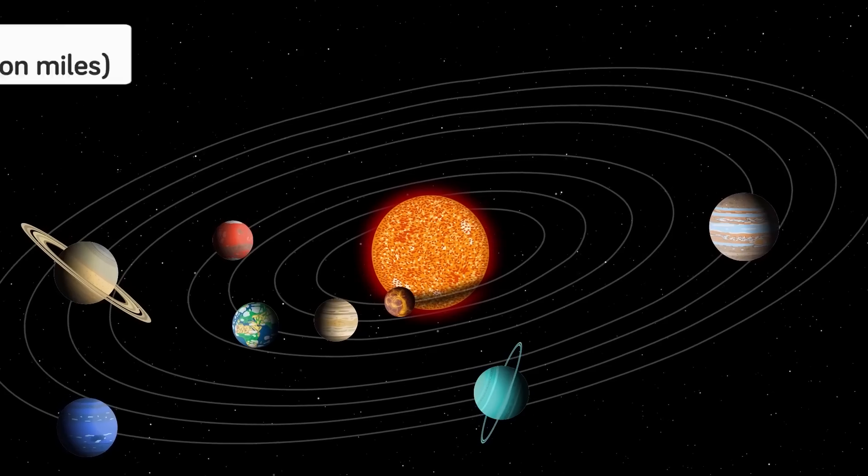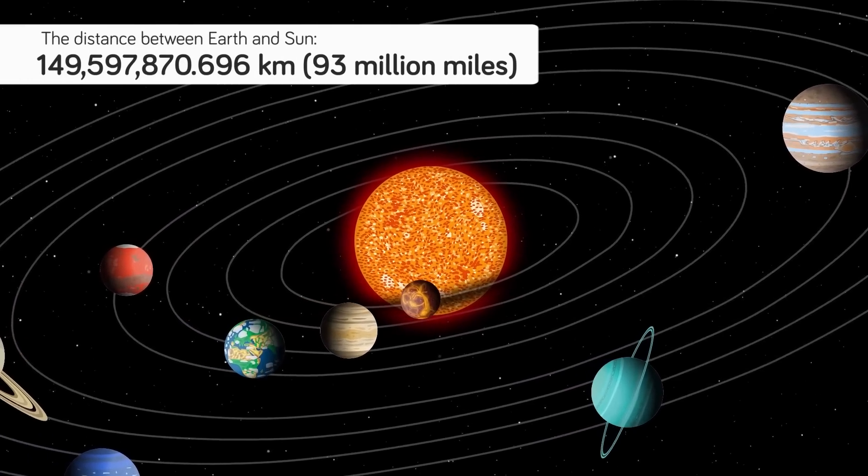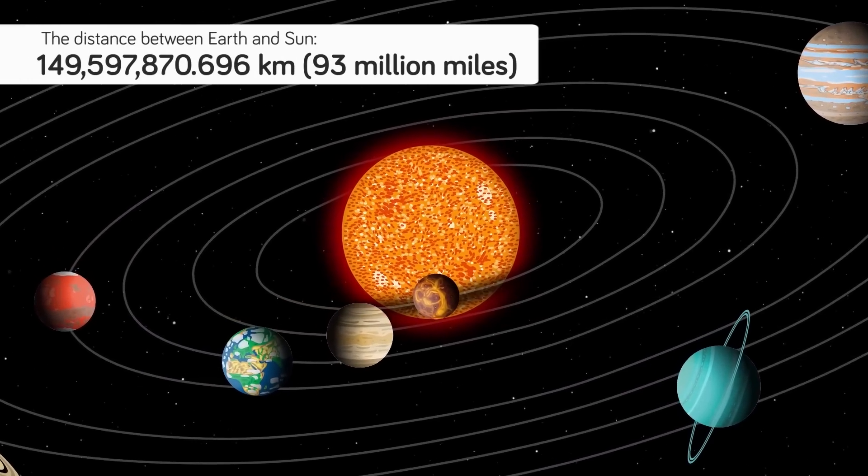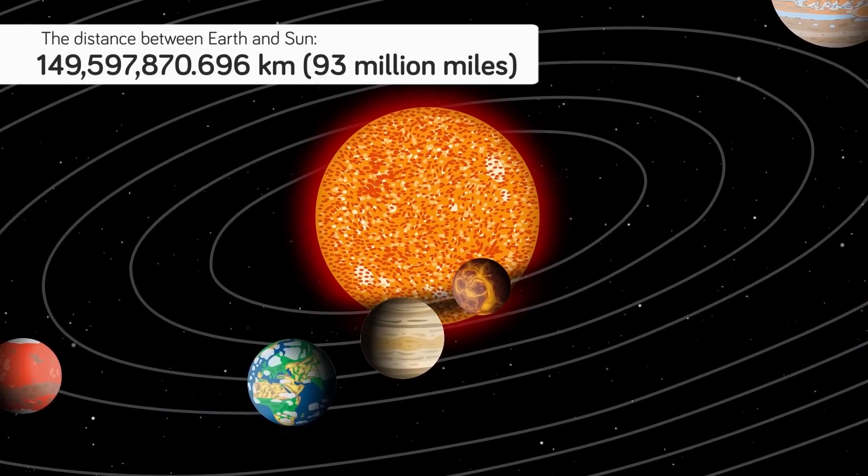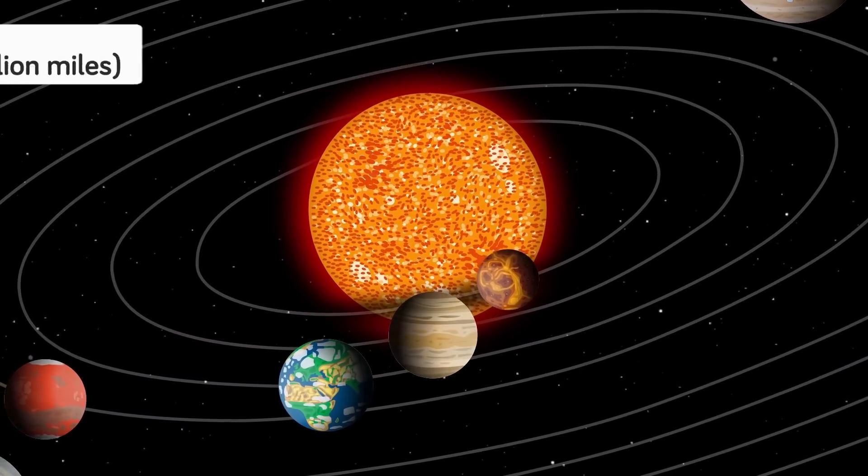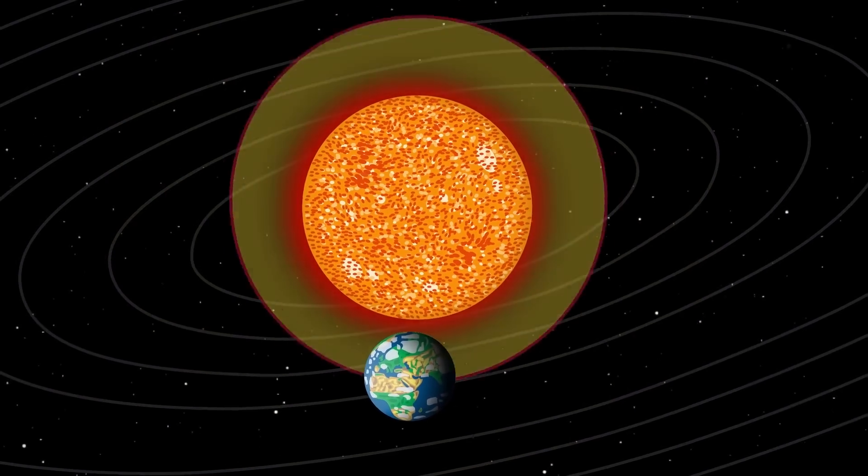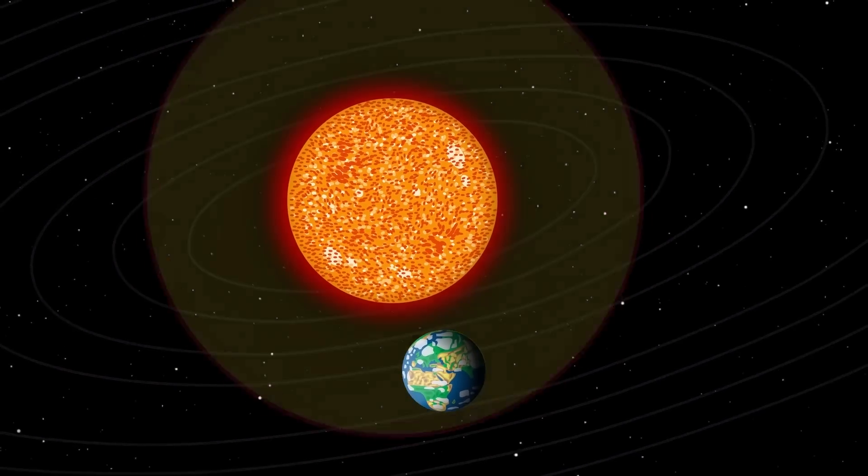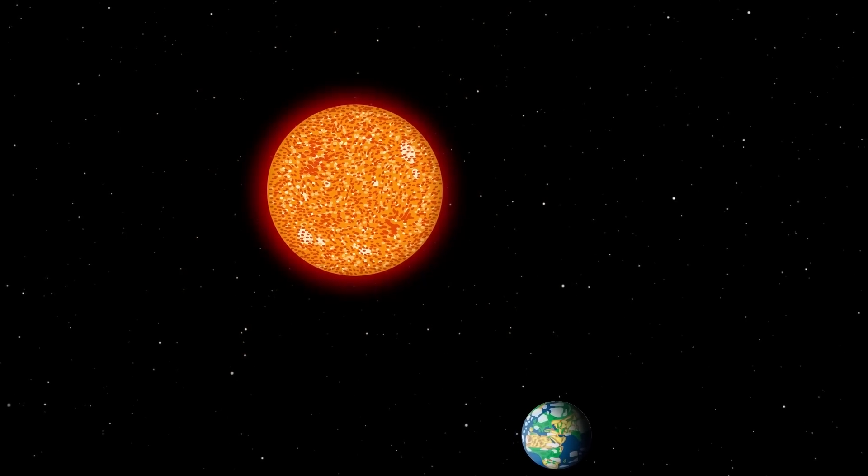Right now the Earth is 149,597,870.696 kilometers away from the sun, but let's round that number to about 93 million miles. But did you know that our dear blue planet is actually on the move? And that distance is growing larger all the time. This is because of the loss of mass of the sun due to radiation. But don't worry, we won't be drifting away from the sun anytime soon.